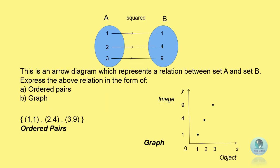Besides an arrow diagram, we can represent a relation in the form of ordered pairs or plotting a graph. This is an example of how we write in ordered pairs. To plot a graph, you just have to remember: the object will represent the x-coordinate, meanwhile your image will represent the y-coordinate.